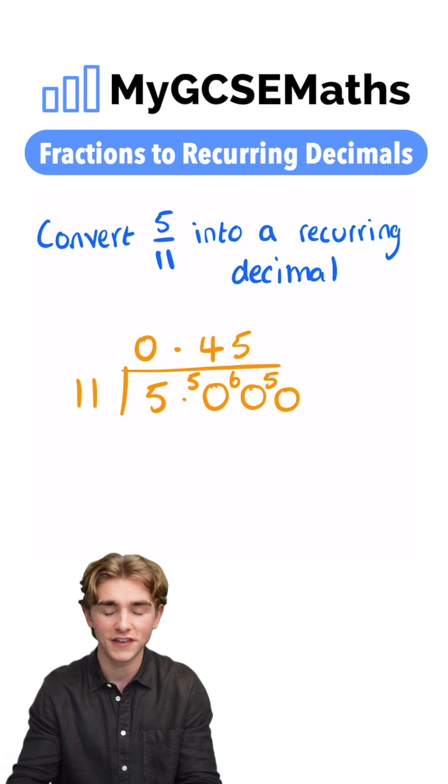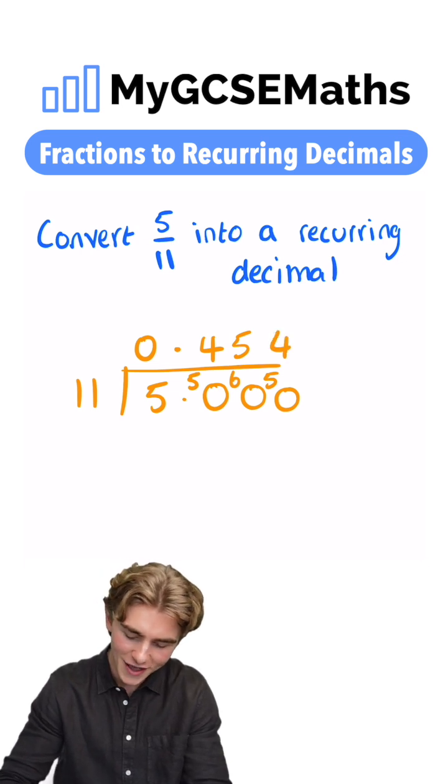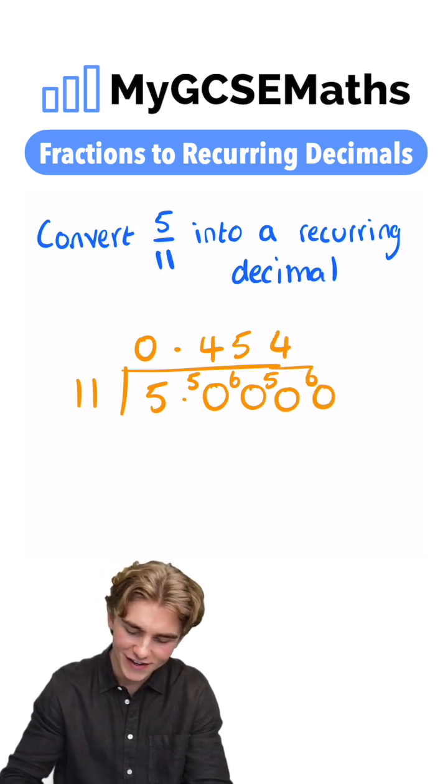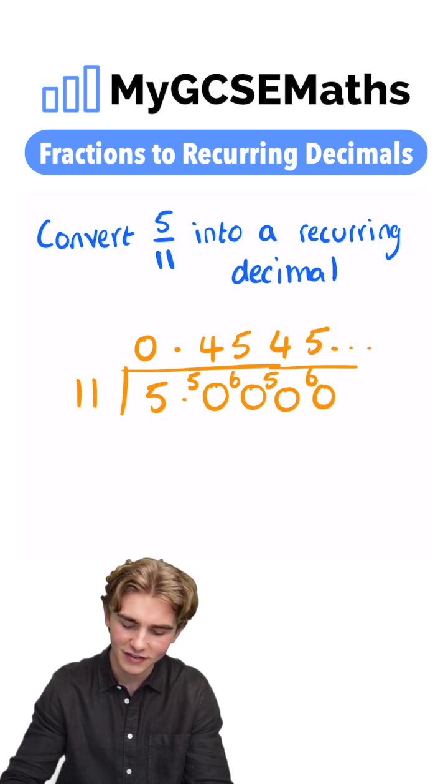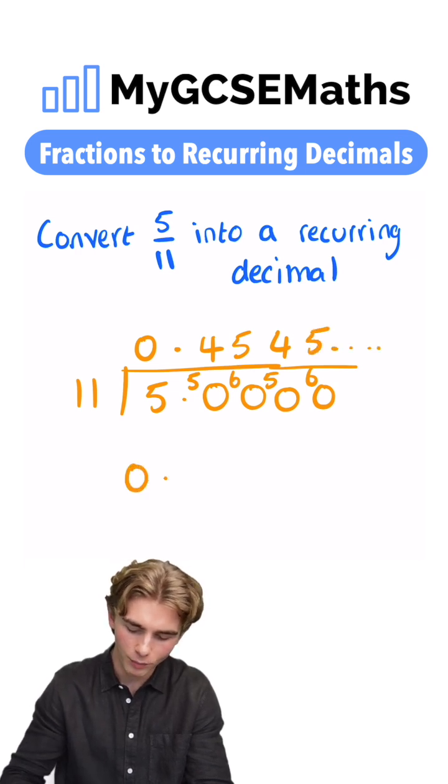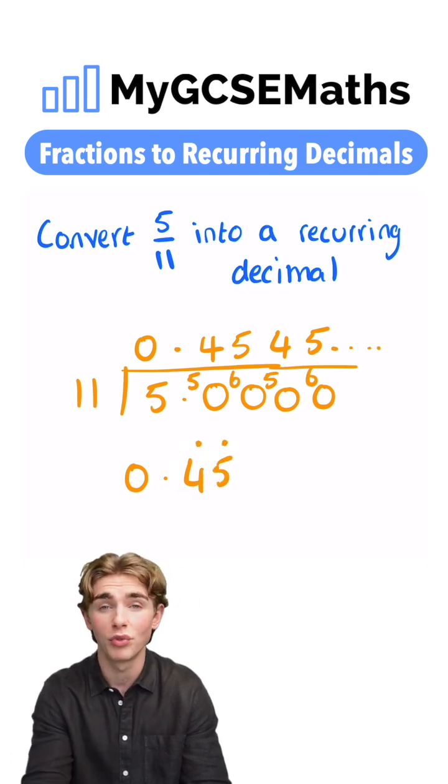Now we have 11s into 50 again. It's going to be 4 again, remainder 6, and we can see that the pattern is going to repeat. 11s into 60 is going to be 5, and then this is going to carry on. We just have 0.45 recurring. We can draw a dot on top of our 4 and our 5 to show that.